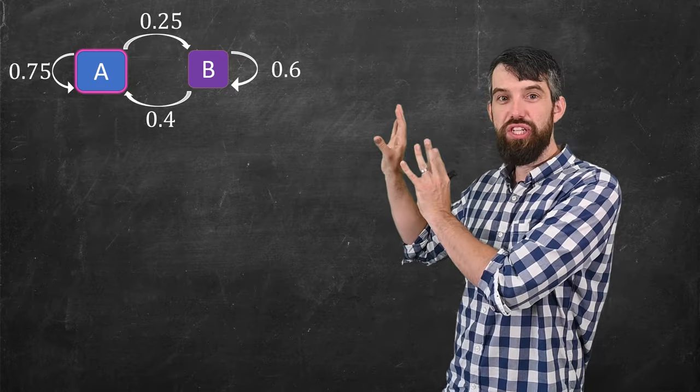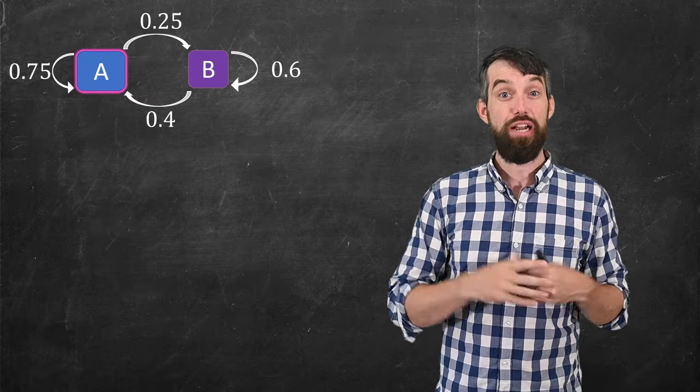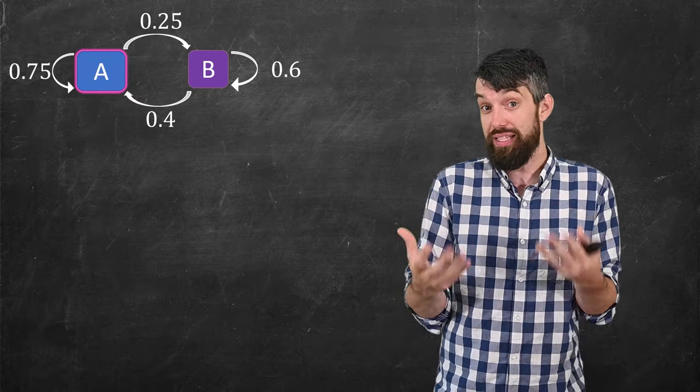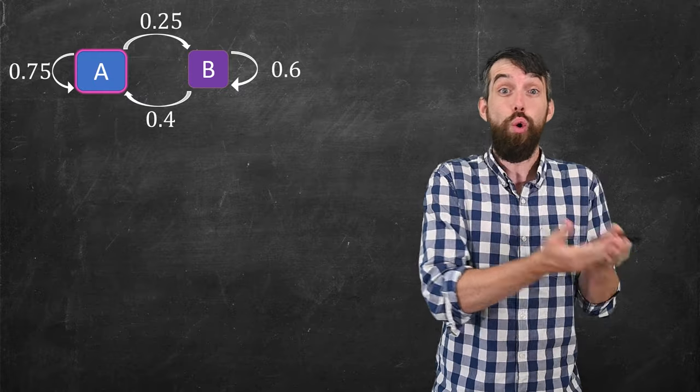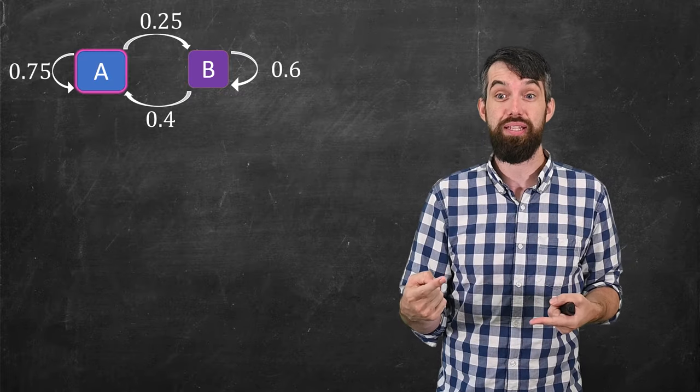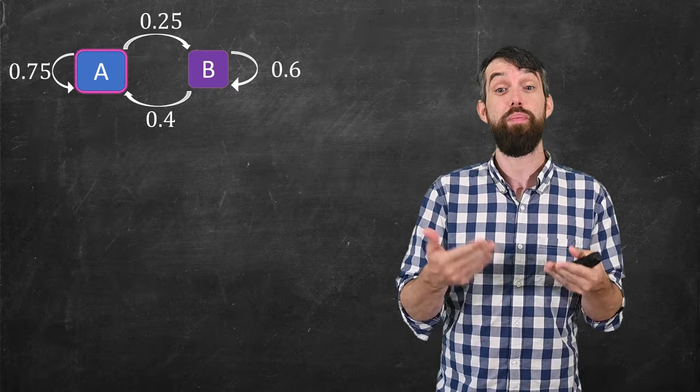Imagine I have a transition diagram. That's what this is. A transition diagram lists the possible states of some system. So in this example, it might be in state A or state B. And then there's a bunch of arrows between those states, and the numbers on each arrow describe the probability.